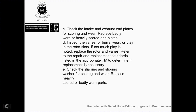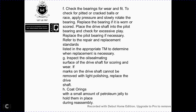Inspect the intake for scoring and wear; replace if badly worn or heavily scored. Inspect bearing boards for wear; check rotor slides for excess play, and inspect rotor vanes for wear. Refer to repair and replacement standards listed in the appropriate TM to determine if replacement is necessary. Check the split ring and slip ring for scoring and wear; replace heavily scored or badly worn parts. Check bearings for wear; examine for pitted or cracked balls, and check for blue discoloration. Rotate the bearing under pressure and check for excess blade play. If the bearing is worn or damaged, replace it using replacement standards listed in the appropriate TM. Inspect oil seal mating surfaces and the drive shaft for scoring and wear. If marking on the drive shaft cannot be removed by polishing, replace the drive shaft.